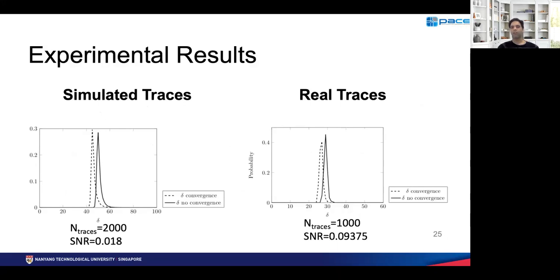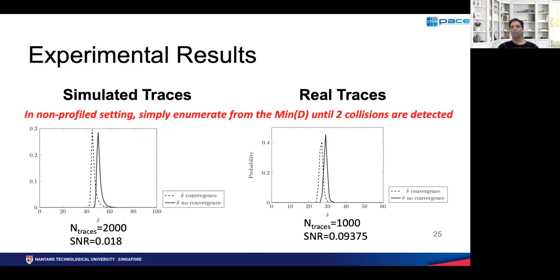Here are simulated and real experimental results computed at different SNR values. You can see that when a convergence is occurring versus not occurring, the distribution is slightly different and can be distinguished. However, these distributions are only for demonstration, because unless you are profiling you won't easily obtain them. Therefore the idea we follow is that instead of trying to draw the distribution, we simply enumerate from the minimum value of D until we find a few convergences. In the experiment we conducted, we actually found up to four convergences in the top 20 values of D, which allowed us to recover the key.